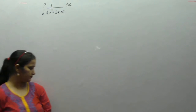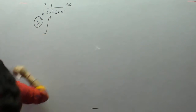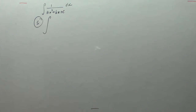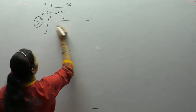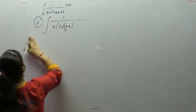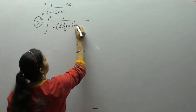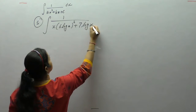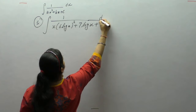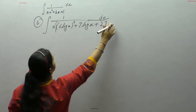Now the next question is: integral of 1 upon x times (6 log²x + 7 log x + 2) dx.